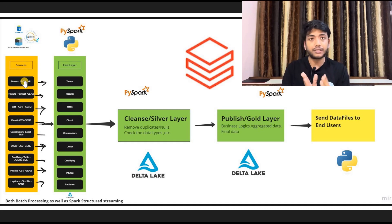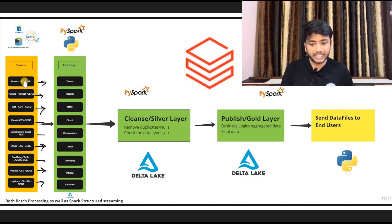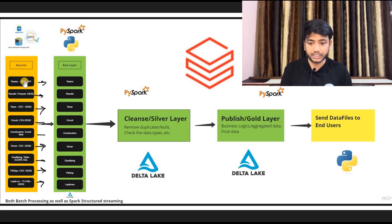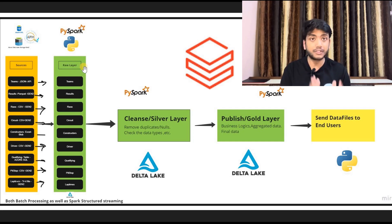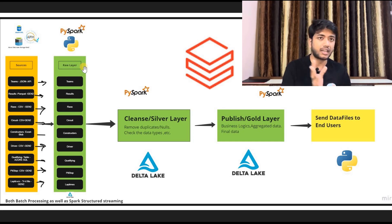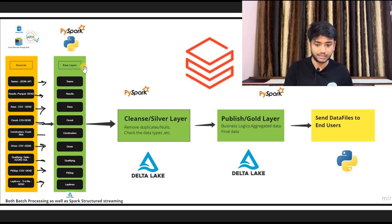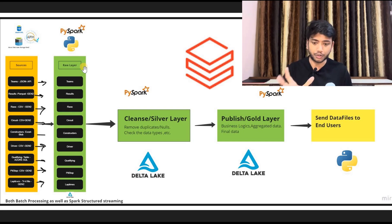Now with all these sources, we will try to get this data into our Delta Lake — that is our bronze layer, also called the raw layer. Using Databricks with PySpark and Spark SQL commands, I will be fetching this data into our Delta Lake raw container, or what we can call the bronze container.